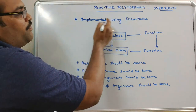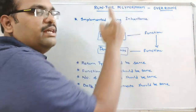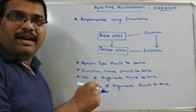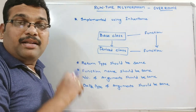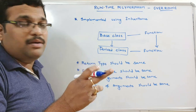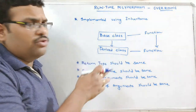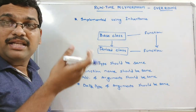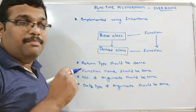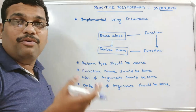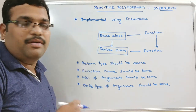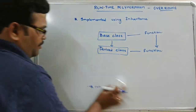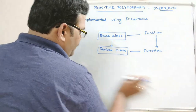Runtime polymorphism must be implemented using the inheritance concept — without inheritance we cannot achieve method overriding. Coming to compile time polymorphism, there is no use of inheritance; we can directly achieve it by implementing constructor overloading or function overloading.